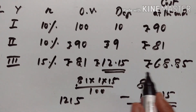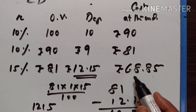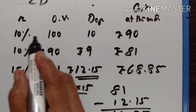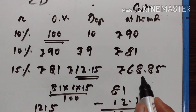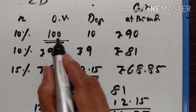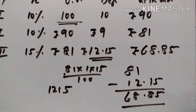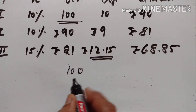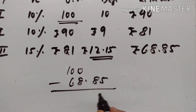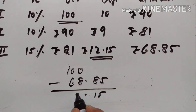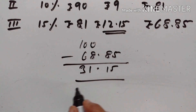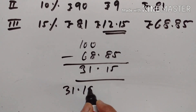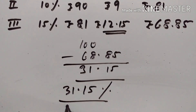At the end of the third year, the cost of the machine is equal to Rs. 68.85. If the original value is equal to Rs. 100, the total depreciation is equal to Rs. 100 minus Rs. 68.85. So the total depreciation is equal to 31.15% since it is calculated for Rs. 100.